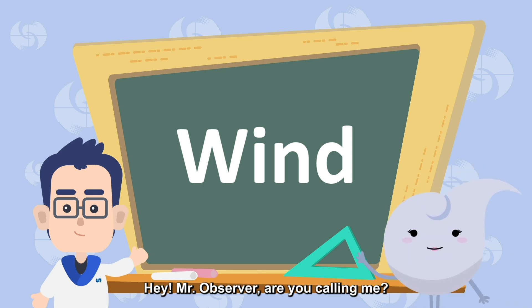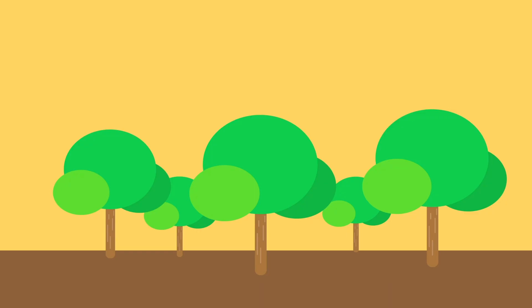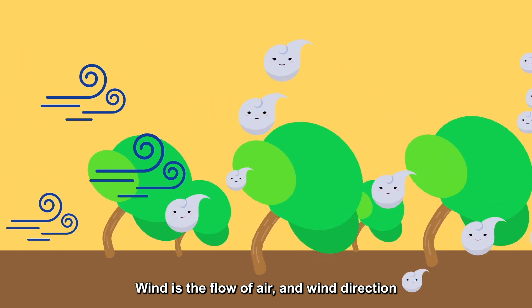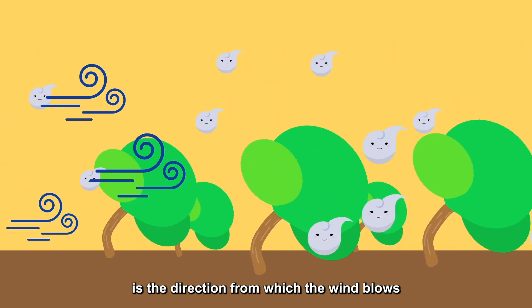The wind is... Hey, Mr. Observer! Are you calling me? Yes, I am explaining the definition of wind. Wind is the flow of air, and wind direction is the direction from which the wind blows.